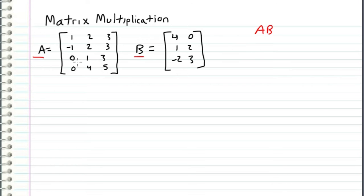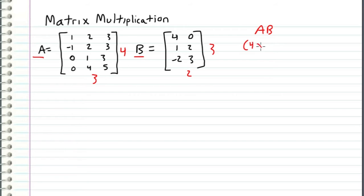Matrix A has four rows and three columns, therefore it is a four by three matrix. Matrix B has three rows and two columns, making it a three by two matrix. So A times B is a four by three matrix times a three by two matrix. The first thing we have to do is check whether or not we can actually multiply these two matrices together.